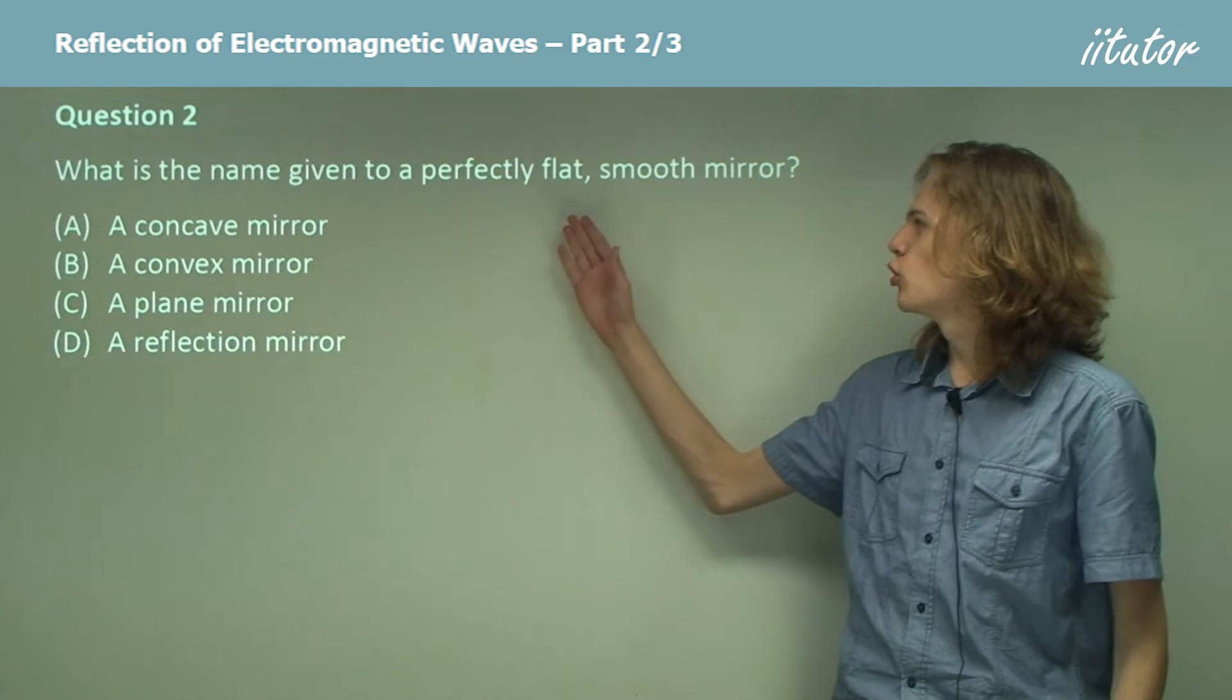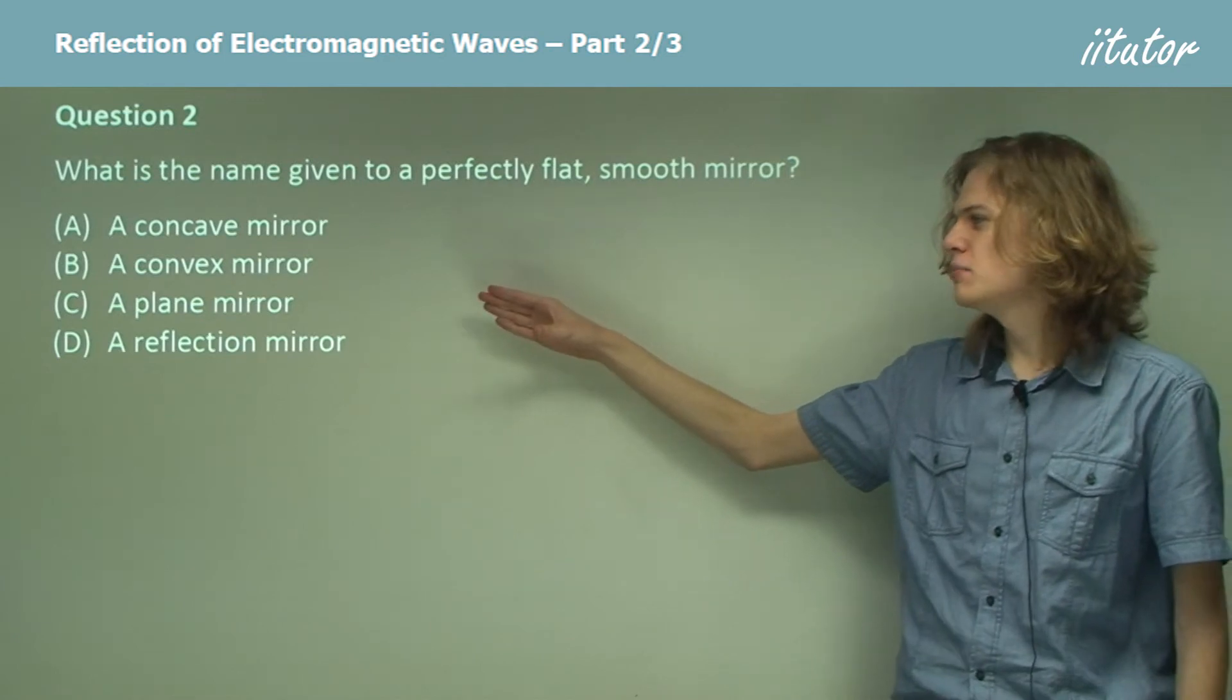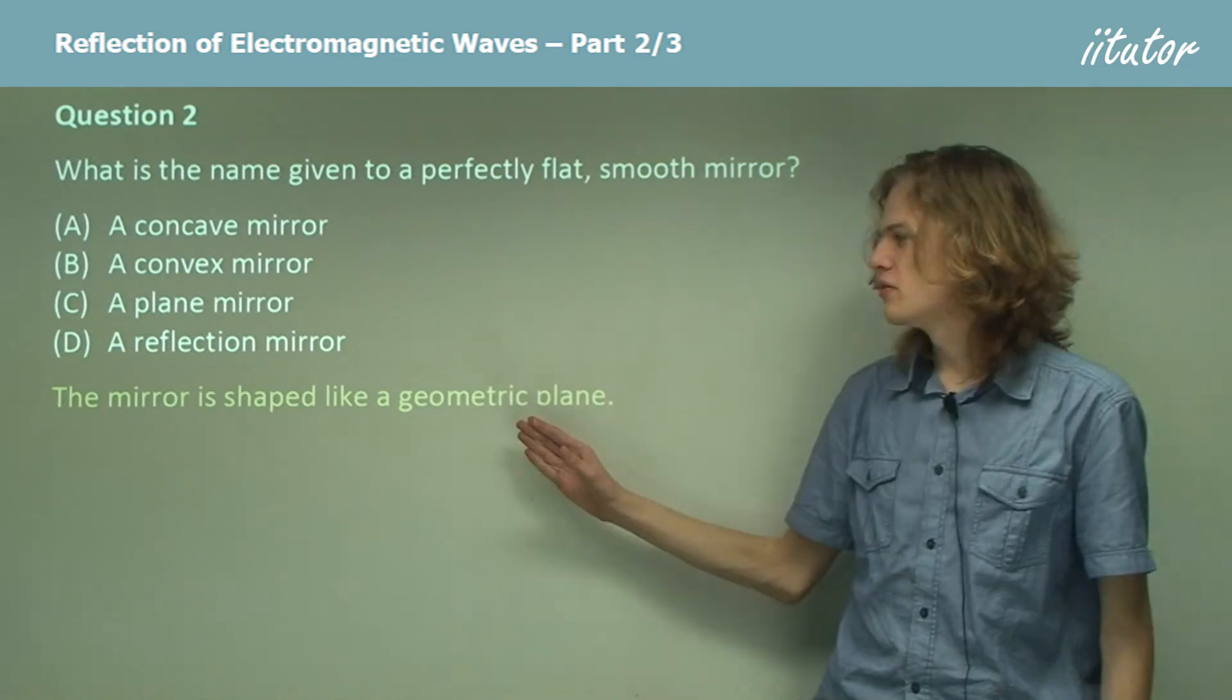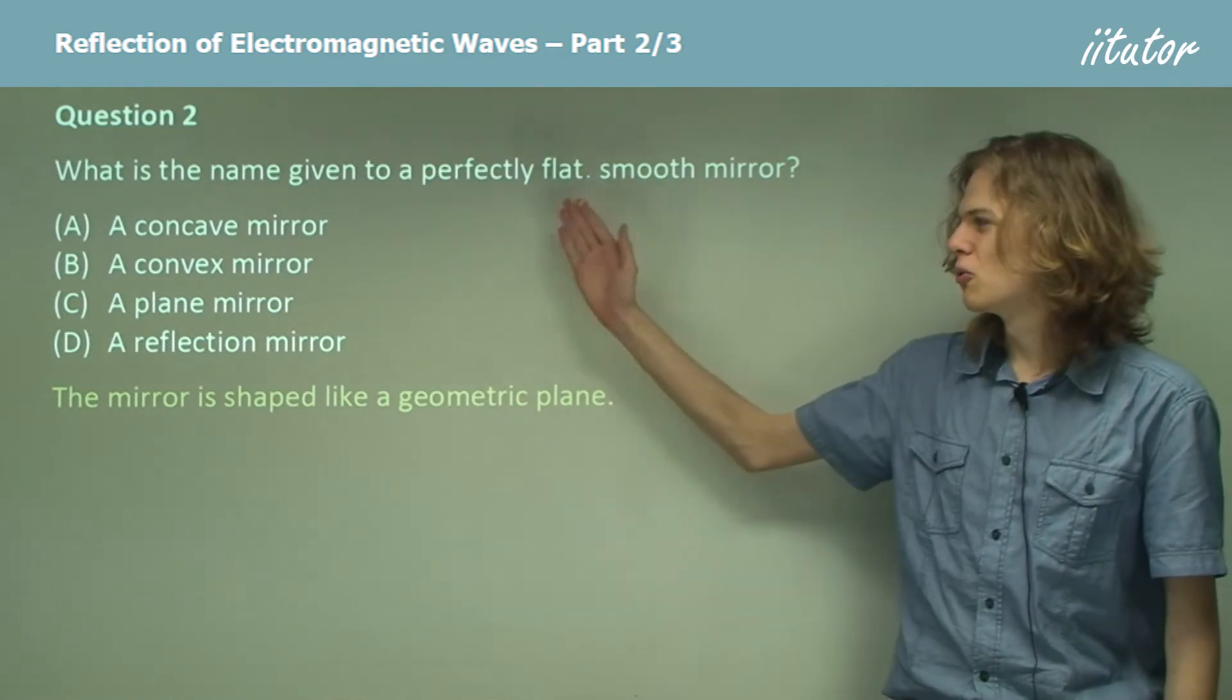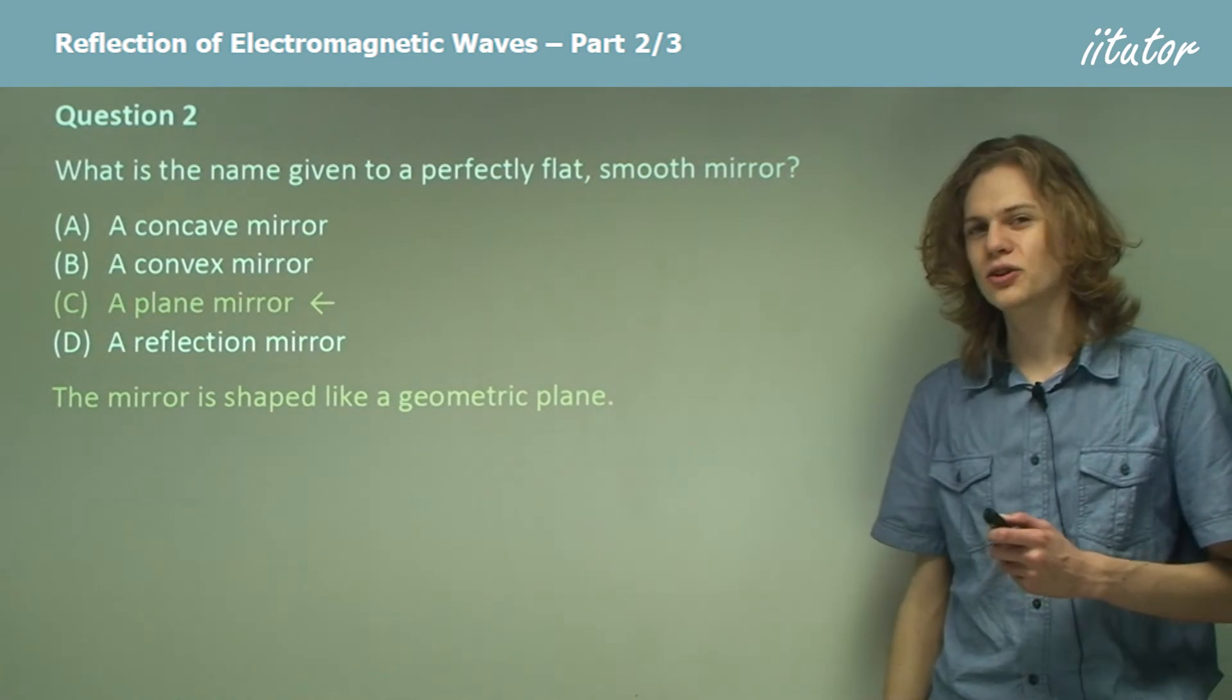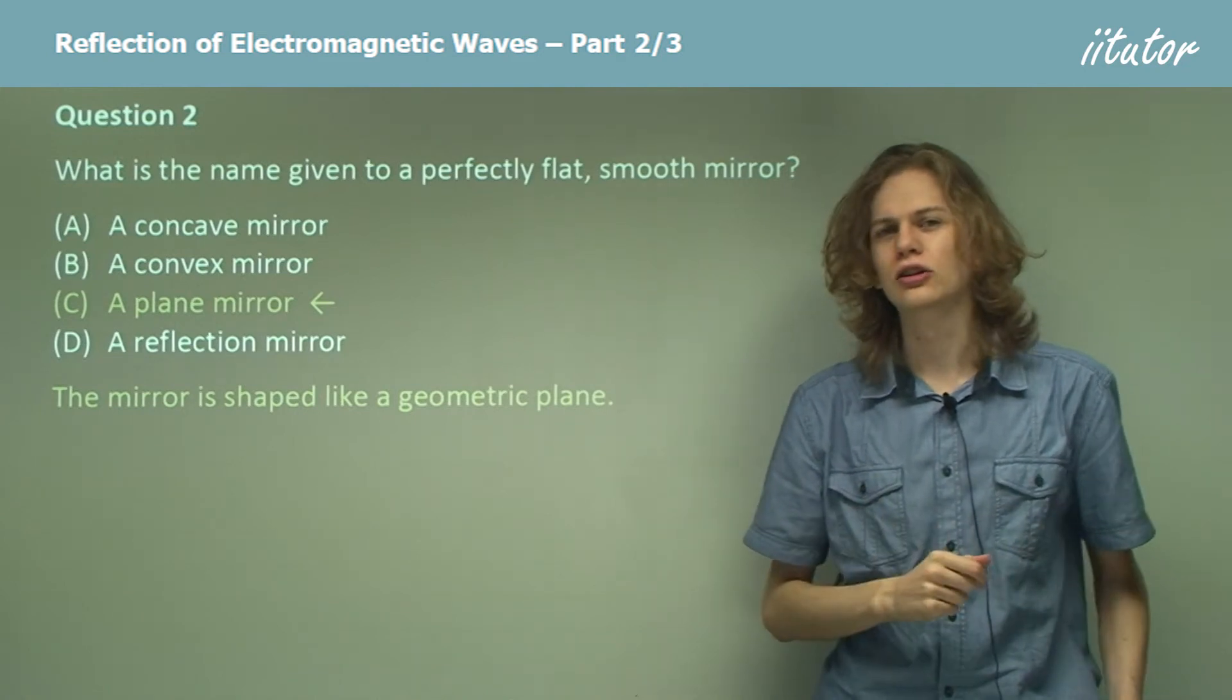What is the name given to a perfectly flat, smooth mirror? Is it a concave mirror, a convex mirror, a plane mirror, or a reflection mirror? Well, our answer here is that the mirror has to be shaped like a geometric plane if it's perfectly flat, which means that we can call it a plane mirror. So c is the correct answer. Concave and convex mirrors are different kinds of mirrors that we'll be covering in a little while.